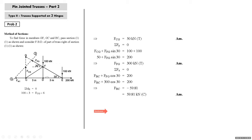Three moment equilibrium conditions are possible in method of sections when three convenient moment centers exist — meaning at each center, two of the three unknown member forces converge so they go off, allowing the third to be found independently. This chapter on pin jointed trusses has been covered in two lectures. It is for autonomous colleges in Mumbai region such as VJTI, SPIT, Thakur, and others — not for Mumbai University students.